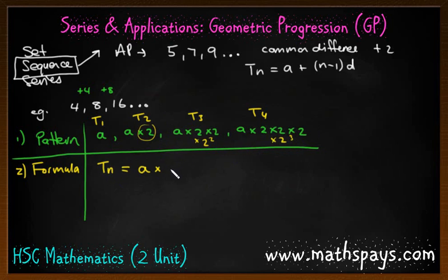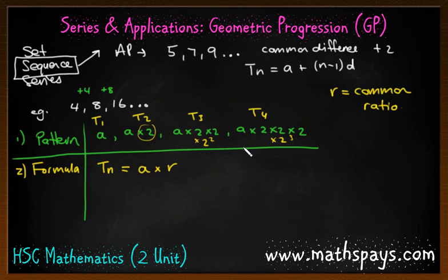What we refer to this multiplier as is r, where r, instead of being a common difference, we call this a common ratio, because we're doubling it. It's a ratio — you might be halving it. So the formula is a times r to the power of n. Now, it's not quite right to say to the power of n, because for the third term we've only got to the power of 2, and for the fourth term we've got to the power of 3. So it should be to the power of n take away 1.